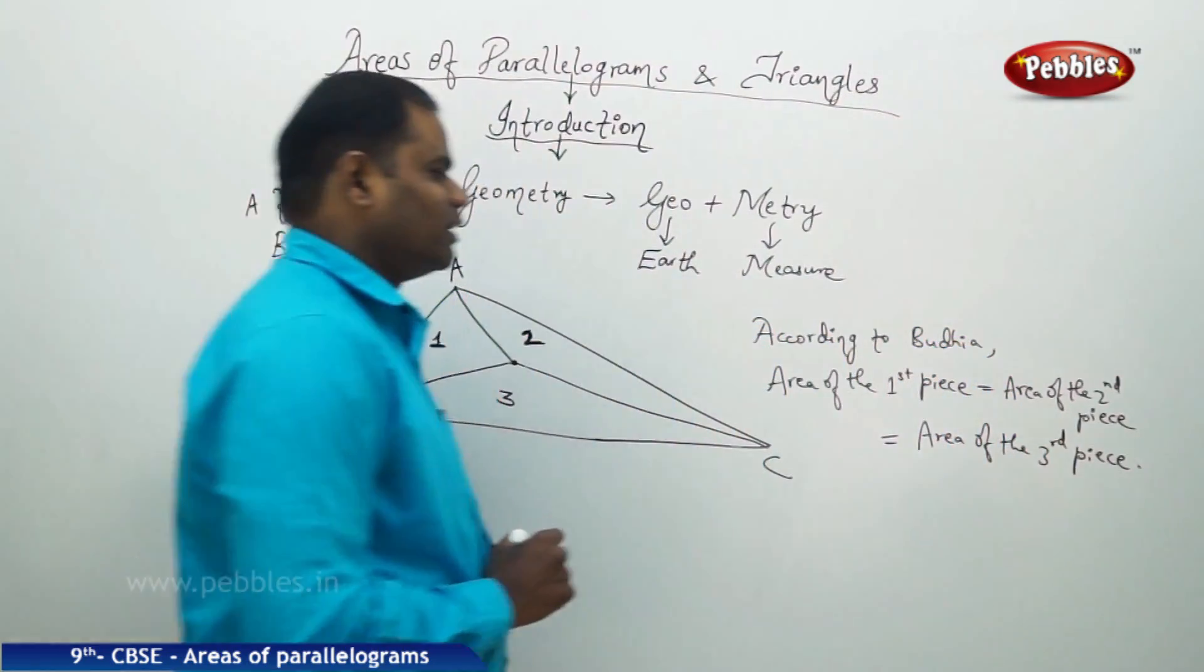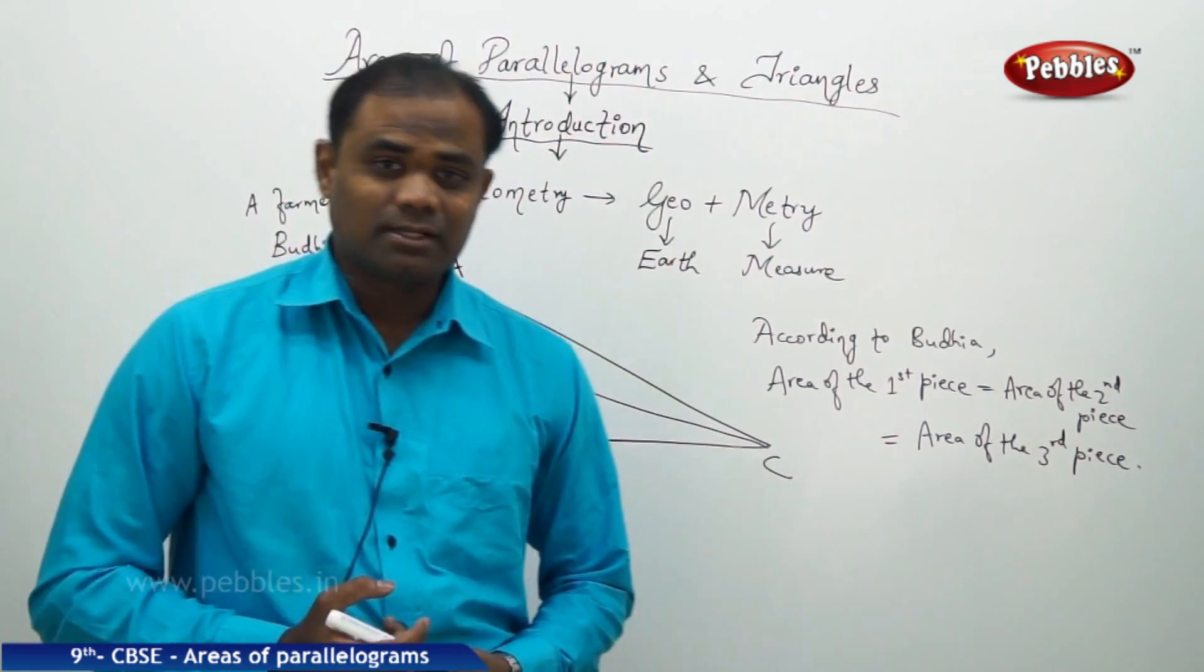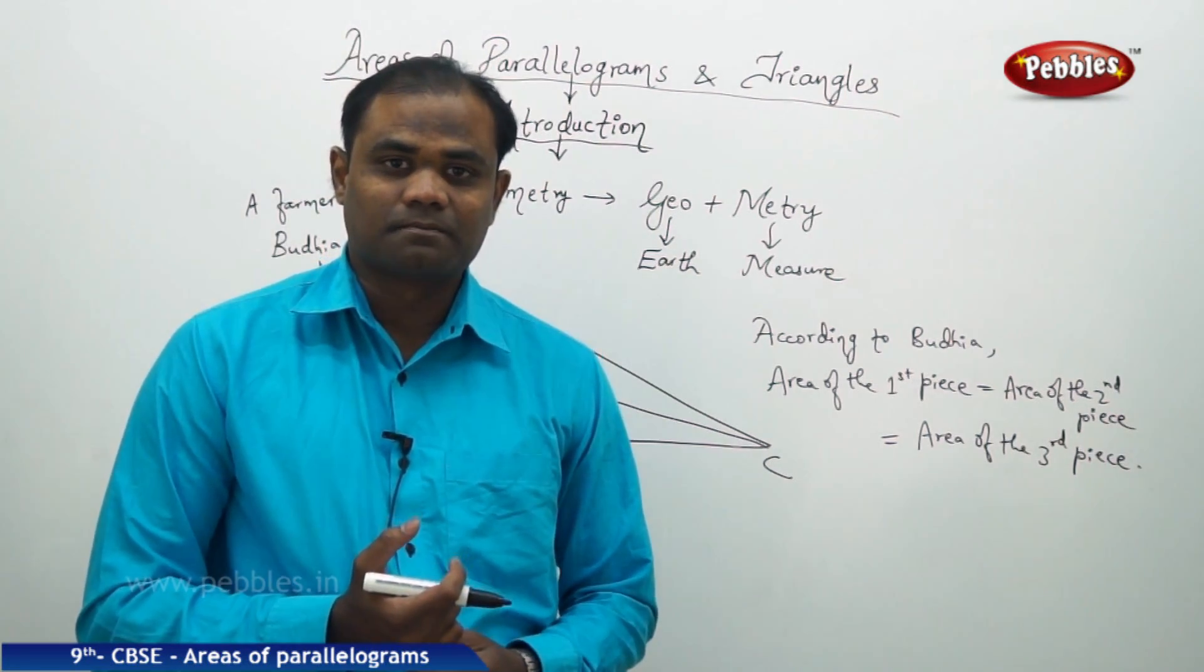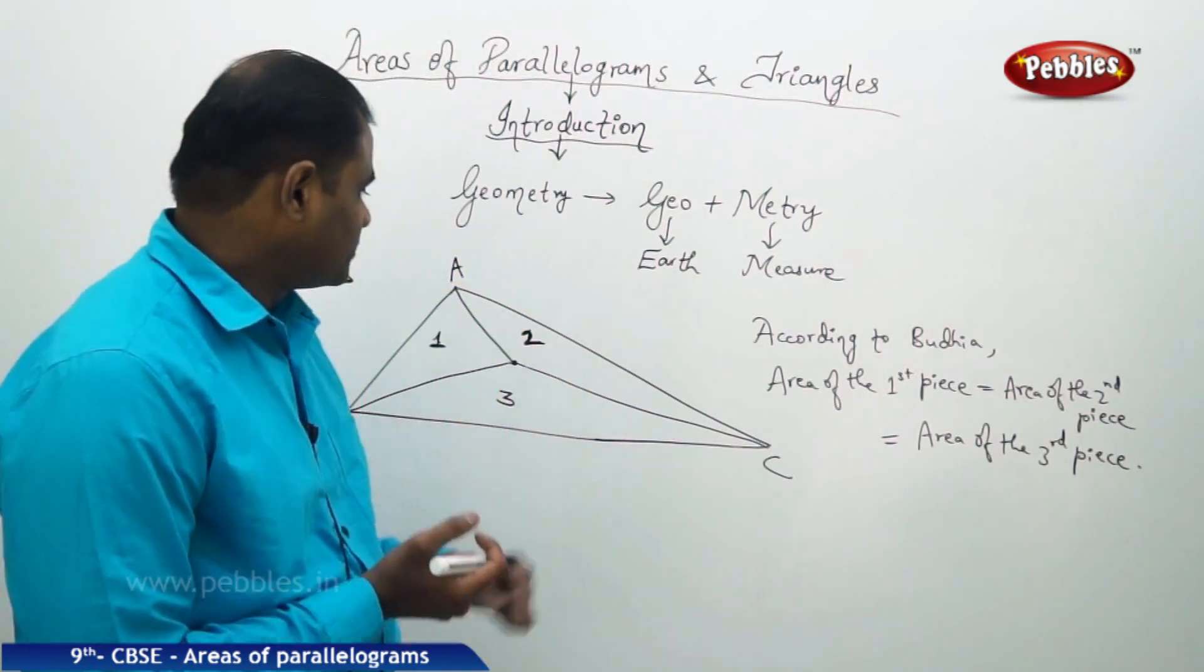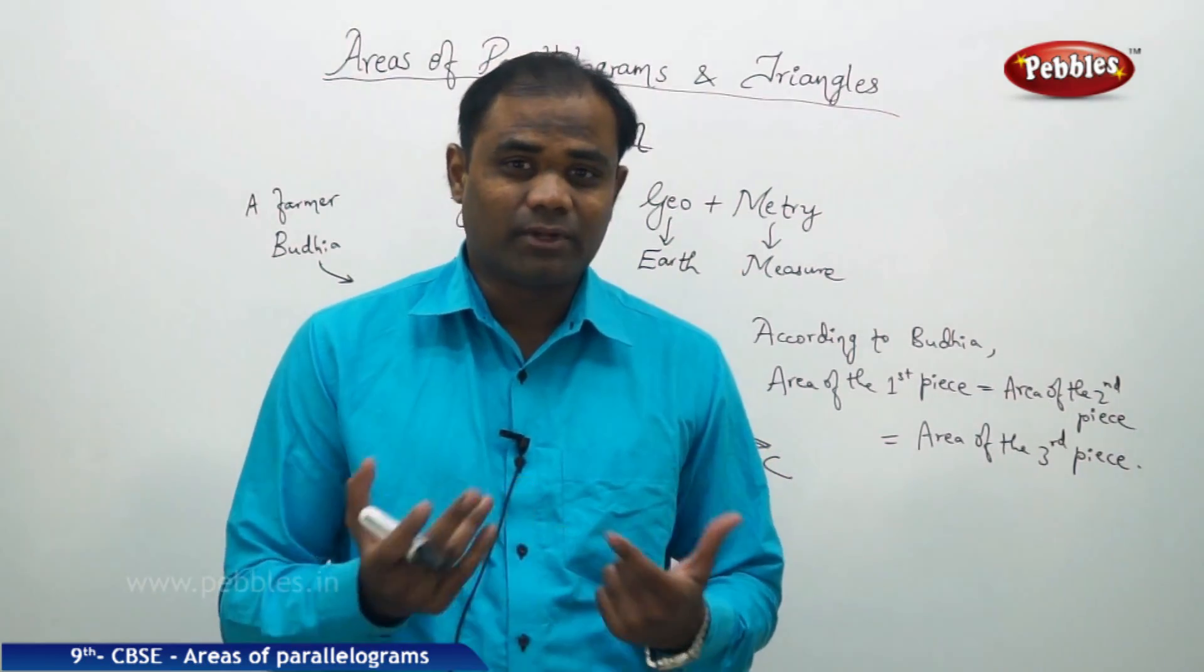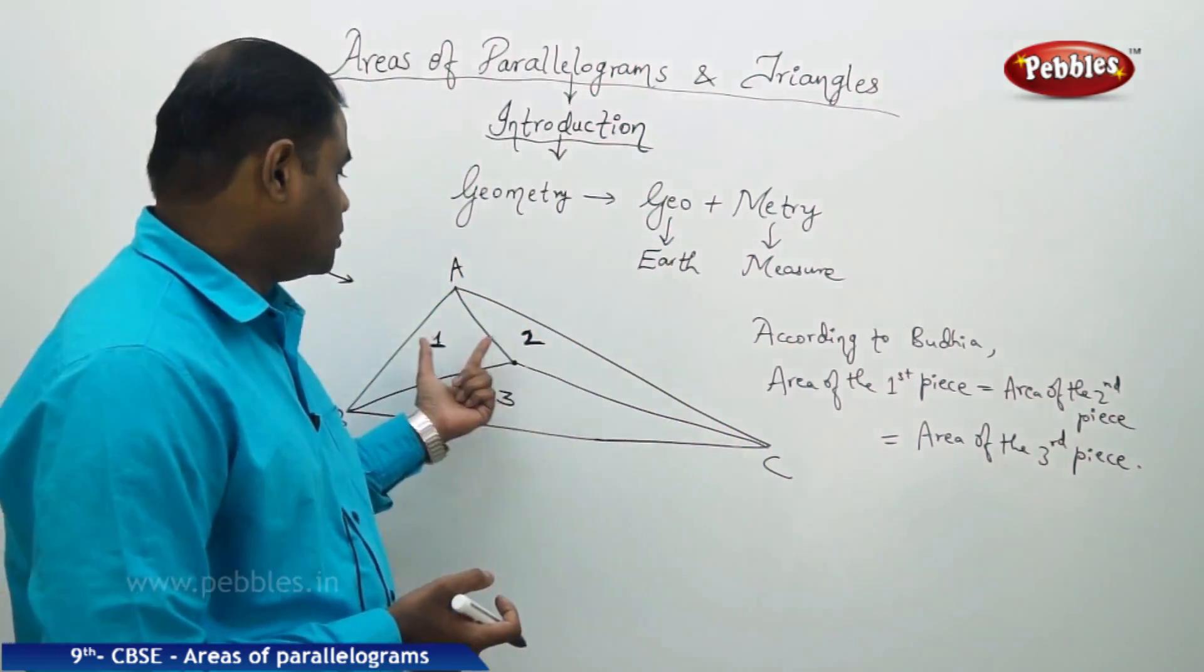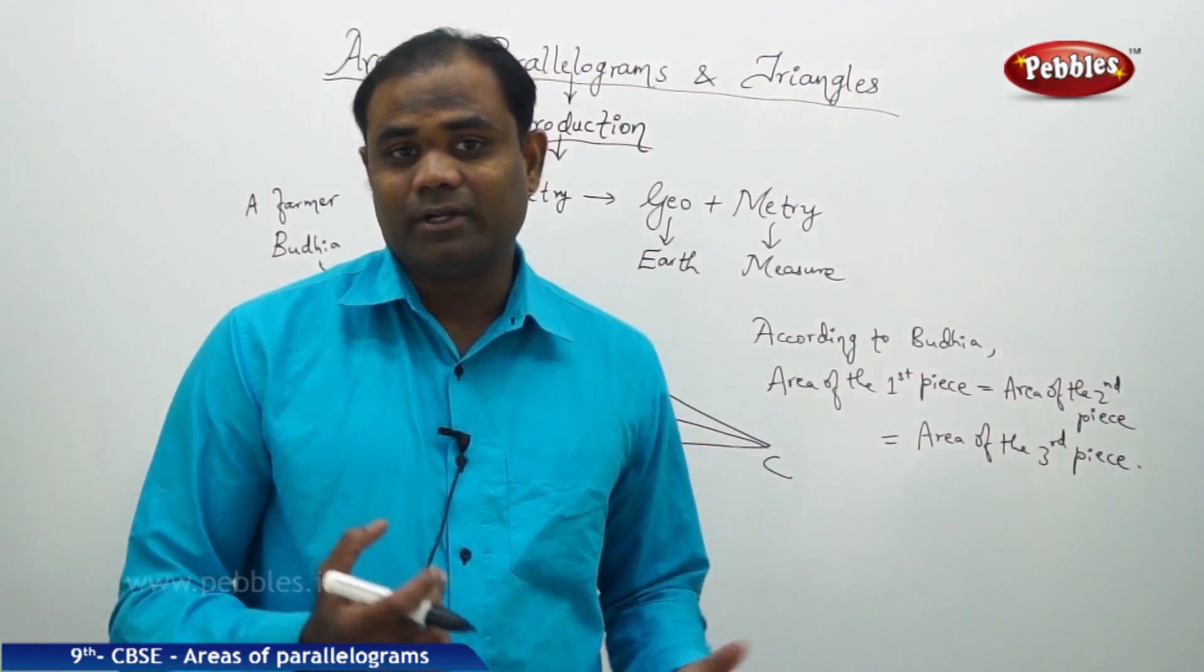This is how we understand each of the areas being equal. Thus the two sons and the daughter would happily share the land without any disputes. But here the biggest question comes: how do you prove mathematically that these three are equal? Is it that they are just convinced without any proofs and justifications, or is it that really Budiya could justify the three pieces of land exactly in equal areas?